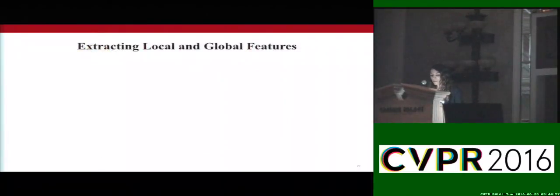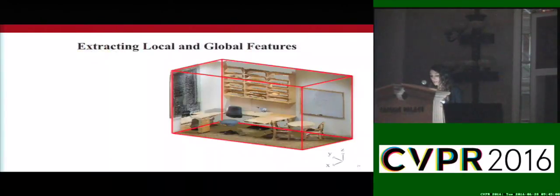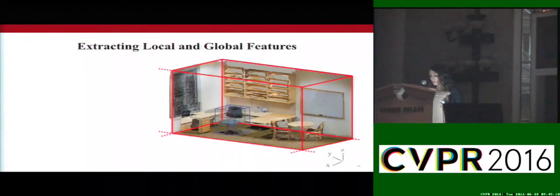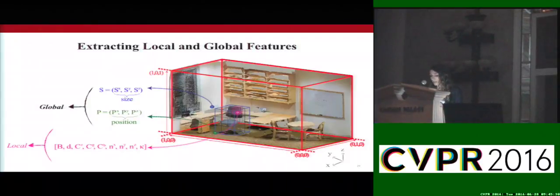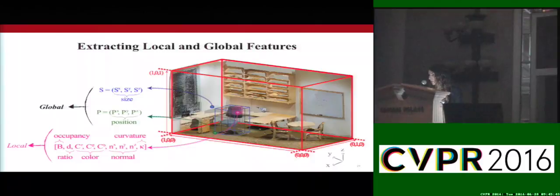We adopt a 3D sliding window approach. At each stride, we evaluate 3D candidate windows on whether the underlying point cloud portion corresponds to the class of interest or not. We represent a detection with a voxelized bounding box, from which we extract a set of global and local features. The global features are computed in the common reference coordinate system — for each detection box we extract its global location p with reference to the origin of the local coordinate system, as well as its relative size s. The local features, which account for the local geometry of the object, are computed in the original space. For each voxel, we extract the binary occupancy, the ratio of points in the voxel over the total number of points in the bounding box, the mean RGB color, normal vector, and curvature of the points.